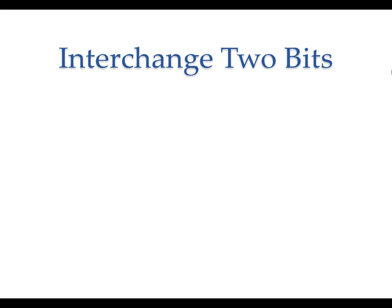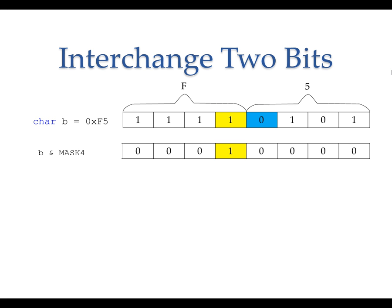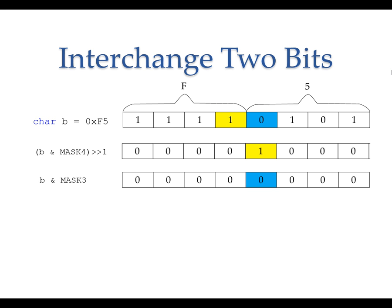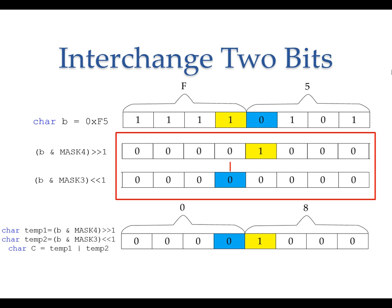Sometimes we need to interchange 2 bits in a bit pattern. Assume B is a char whose value is 11110101, or 0xF5. If we are to interchange bit 3 and bit 4, and clear the rest of the bits, what will be the result? Firstly, we will retrieve bit 4 and clear all other bits — we can bitwise AND the bit pattern with mask 4. Secondly, we will right shift 1 position to the bit 3 position. Next, we will retrieve bit 3 from the original bit pattern by bitwise AND with mask 3, and left shift 1 position to the bit 4 position. Finally, we can bitwise OR the 2 bit patterns. The resulting bit pattern is 00001000, which is 0x08.